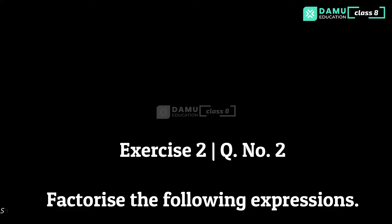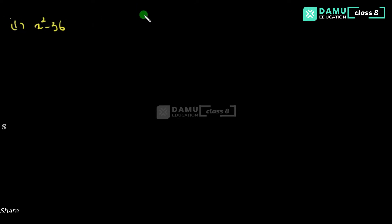So here in this module we are going to discuss what are the solutions for the second question. Our first one is x squared minus 36. If there is a single minus with two perfect square numbers, that is definitely the a squared minus b squared formula. The formula is a squared minus b squared equals a plus b into a minus b.